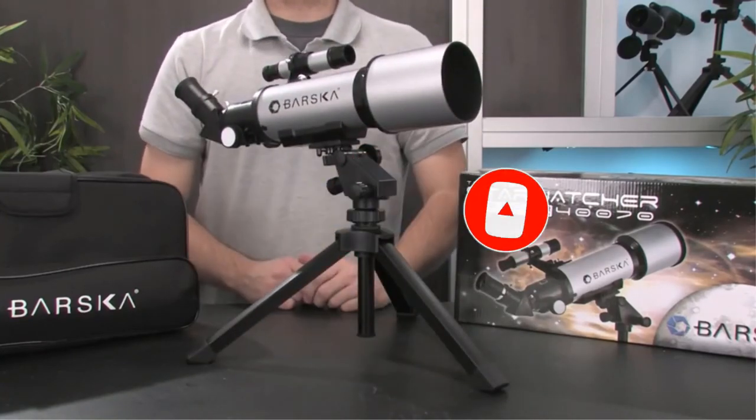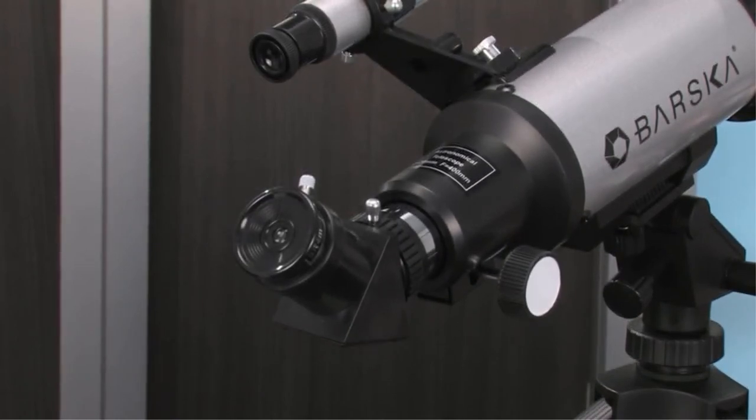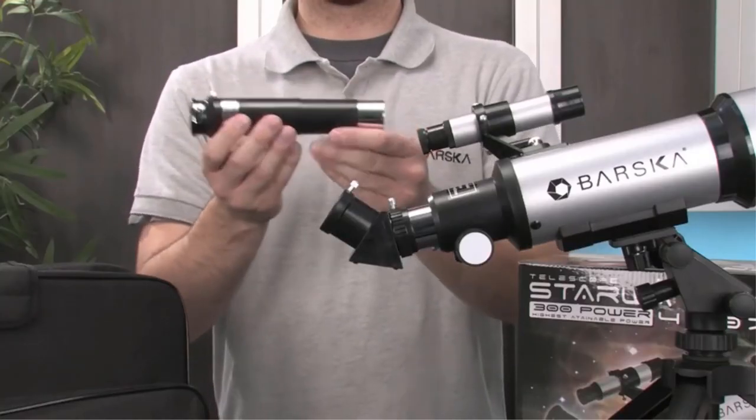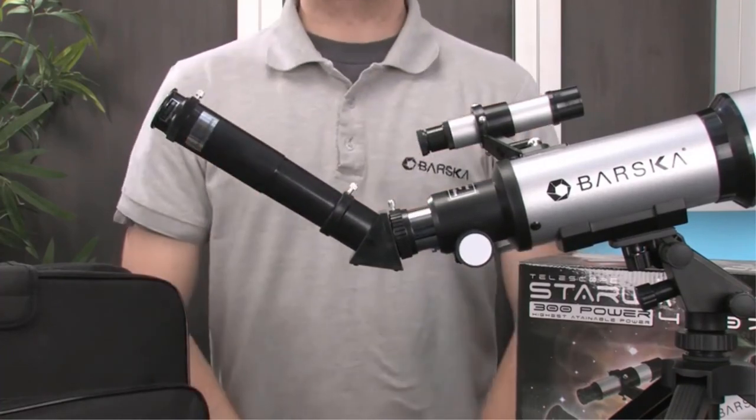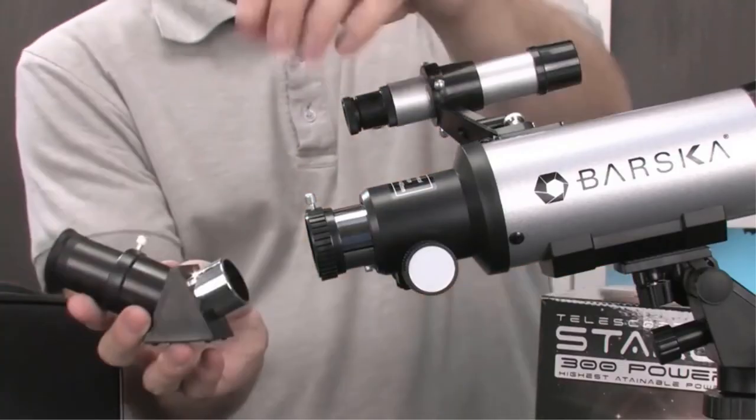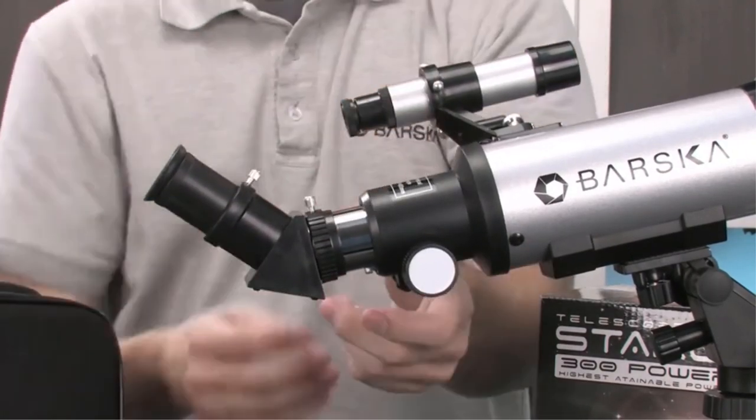Use one of the interchangeable eyepieces with a 3x power Barlow lens for increased viewing capacity. A pan head tripod and mount is included with the telescope, together with a convenient carrying case. Take this mobile telescope outside during the night and the stars will open up before your eyes.